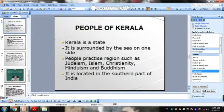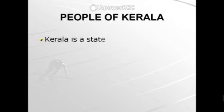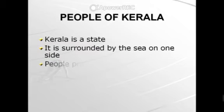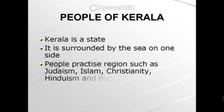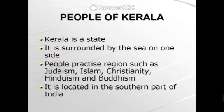Next, we will discuss the people of Kerala. Kerala is located on the south side of India, surrounded by the sea. Kerala has various types of people because it is near Sri Lanka and Indonesia. As a result, Muslims, Christians, Hindus, and Buddhists all live in Kerala, which means many types of diversity are found there.